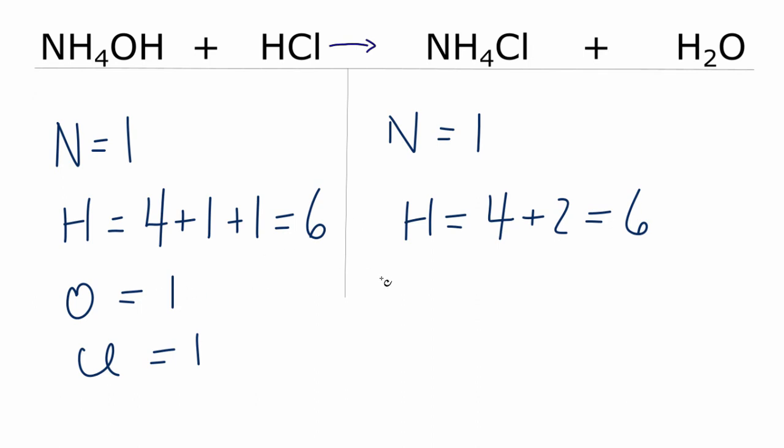Let's do the oxygen. We have one of those. And then chlorine, we have one of those. So when we look at the numbers on each side of the equation, they're the same. We have one nitrogen, six hydrogens on each side, and then the oxygens and the chlorines, they're the same as well. So this equation, it's already balanced.